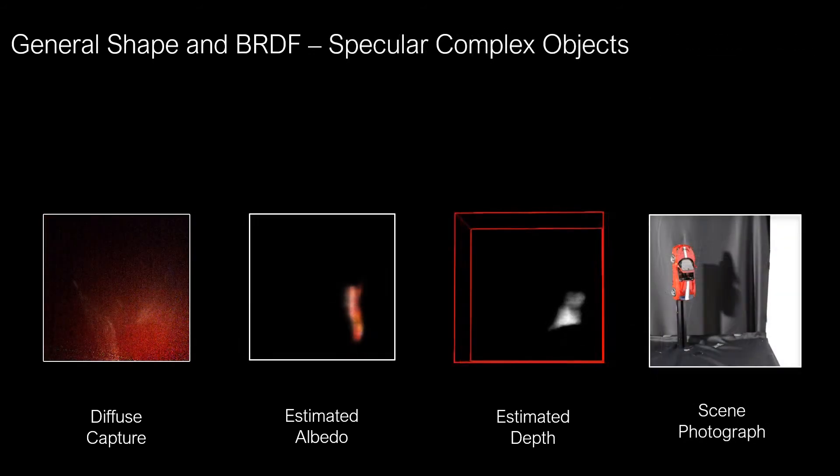For highly specular objects with complex shape, we can recover rough shape and albedo.